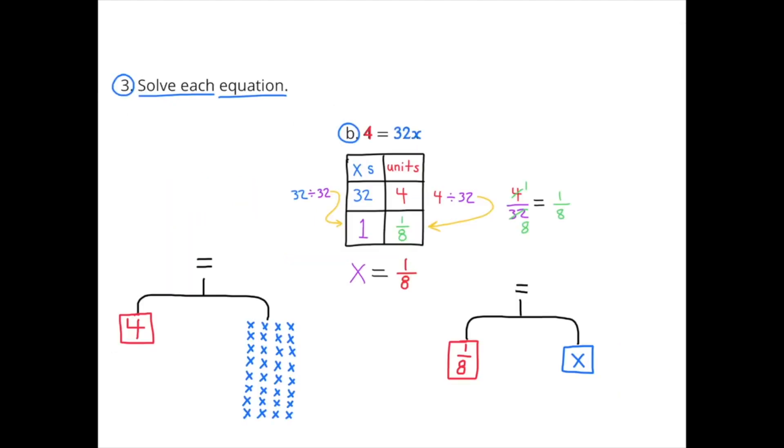B: 4 equals 32 X. Directly under this equation, I have a table. In the left hand column, I have the X's. On the right hand column, I have the units. So 32 X's equals 4 units, or 32 X equals 4. To figure out how much 1 X is worth, I need to divide the number of X's by 32, and that gives me 1 X. And I also need to divide the other side by 32. So 4 divided by 32 equals 1 eighth. So X equals 1 eighth.